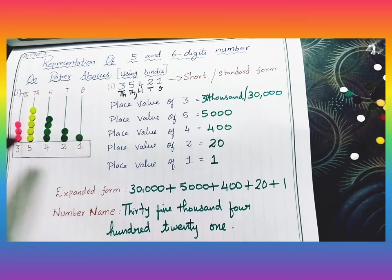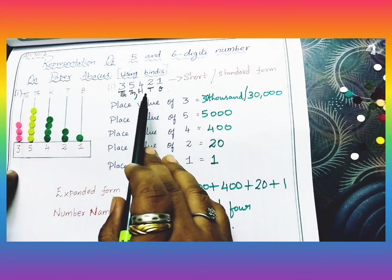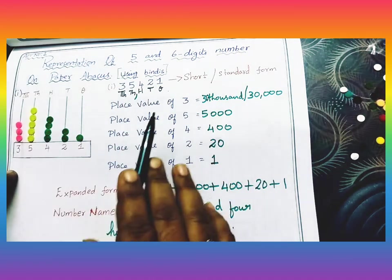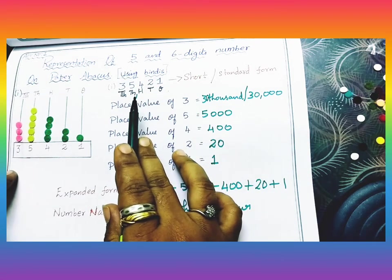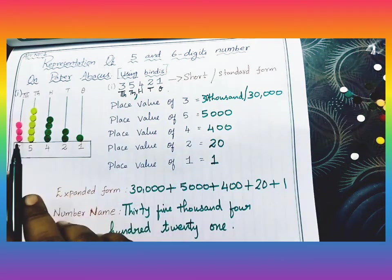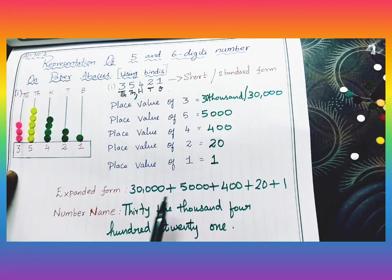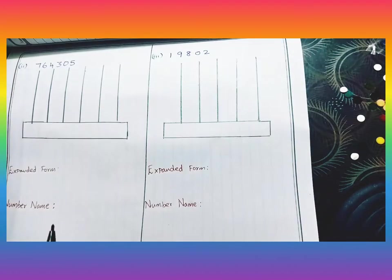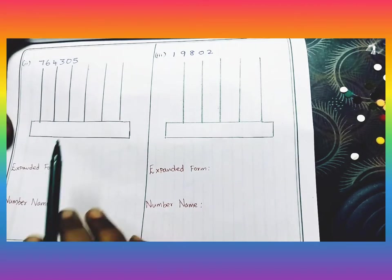The first step: write the place values. Then, according to the family, separate ones, tens, hundreds as one period, and thousands and ten thousands as another period. Then write the expanded form and number name. Now here are two more examples — example two and example three.